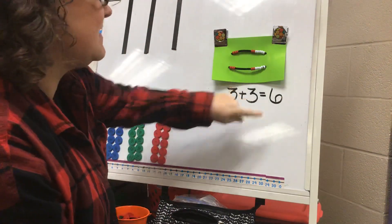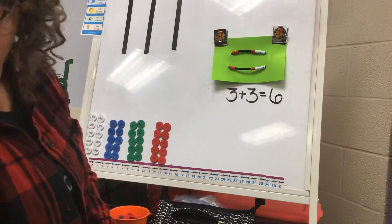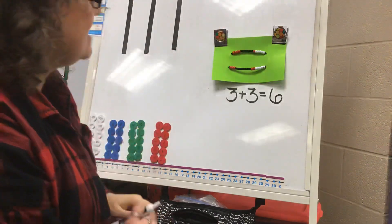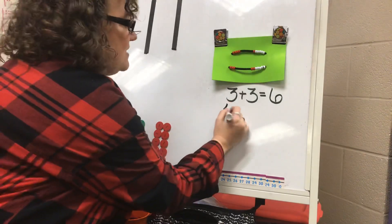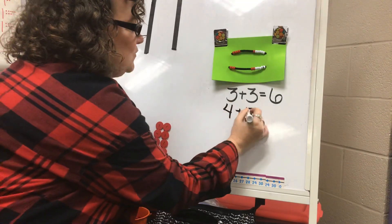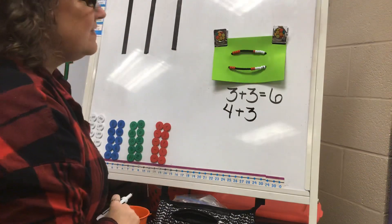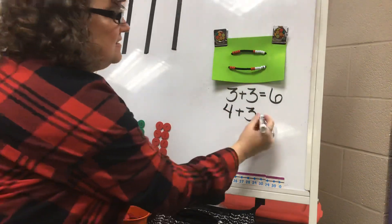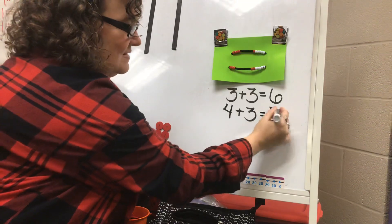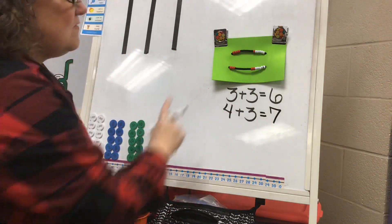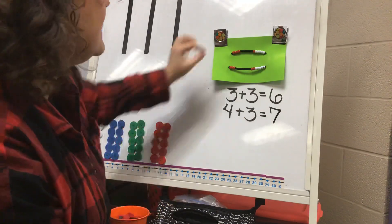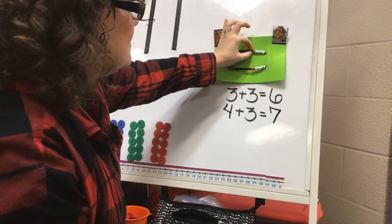So if I know three and three make six, then I can do one more and add another bead to my double. So now I've changed my fact to four plus three. That means my answer is going to be one more than six. Did you say seven? Four plus three makes seven.